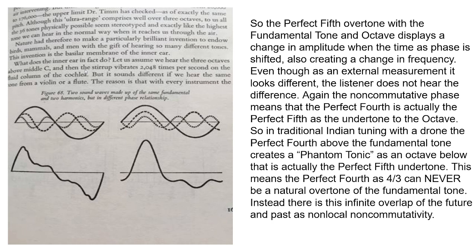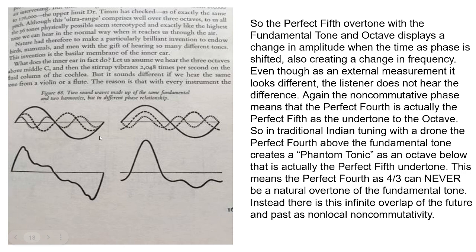In quantum biology, meditation relies on listening rather than visual perception. The key secret is that Fourier analysis of visual perception assumes a linear operator of time and frequency. You can see that when the amplitude and time get phase-shifted, there is a significant change in amplitude — but when we listen, we hear no difference, because both are the perfect fifth as undertone or overtone changed by the phase shift. Our ears do not hear the difference.